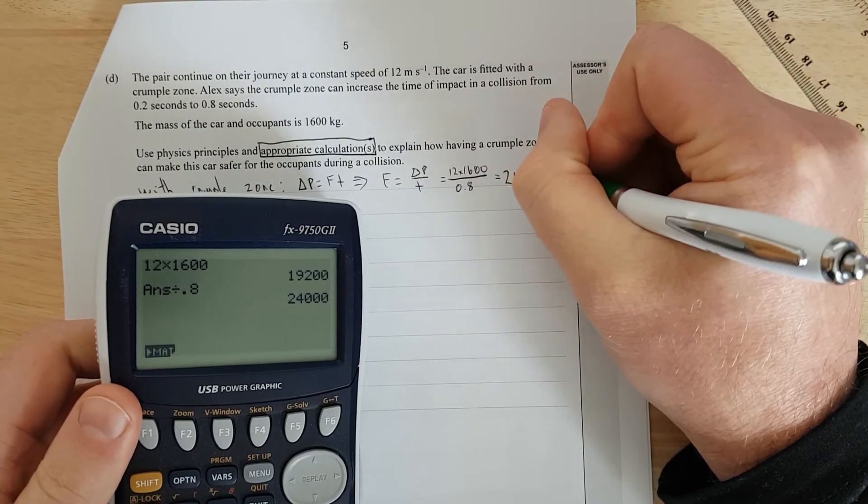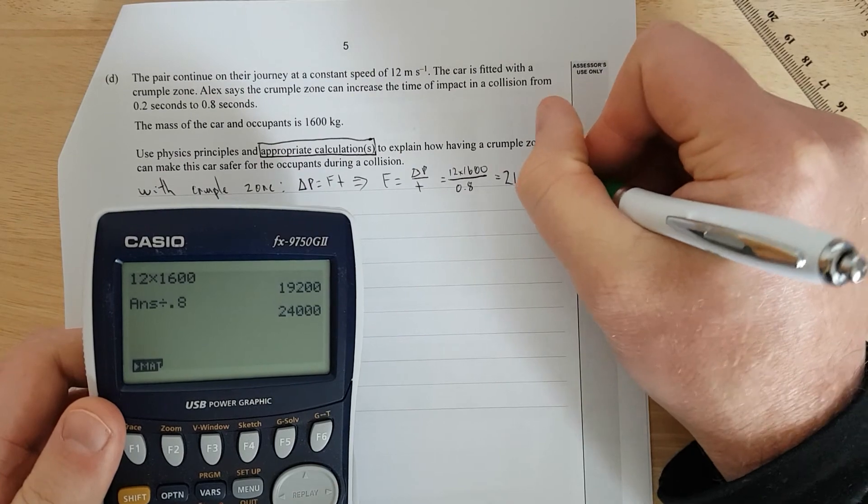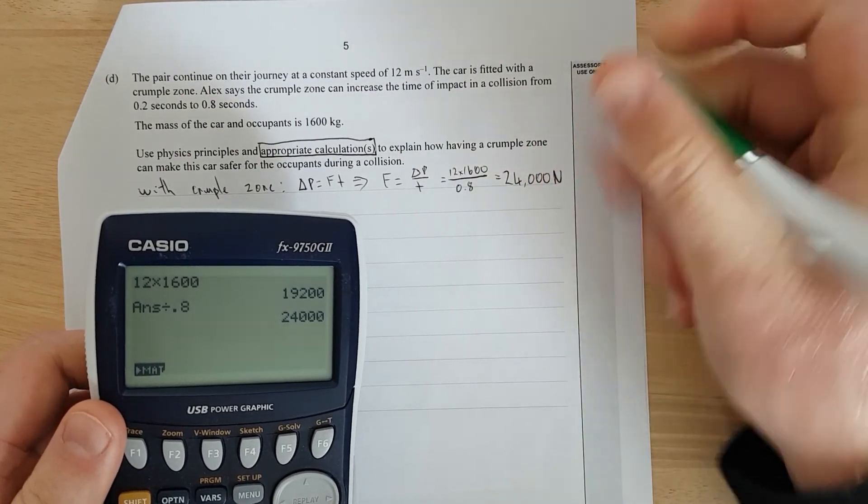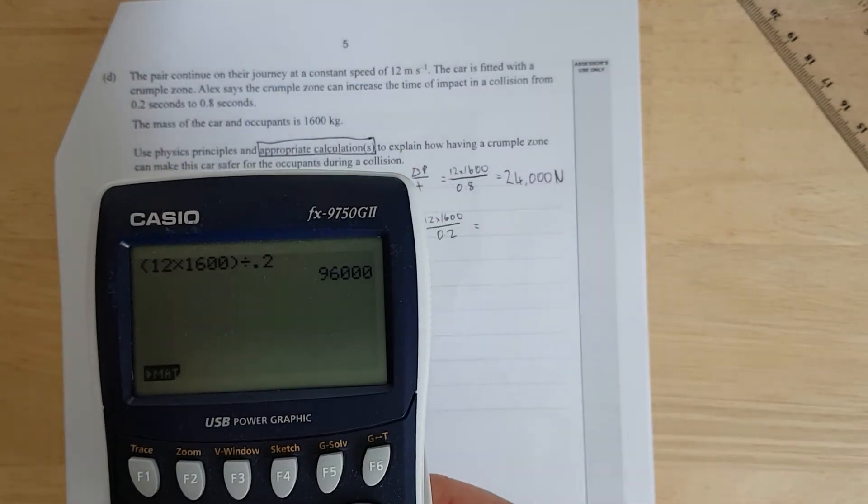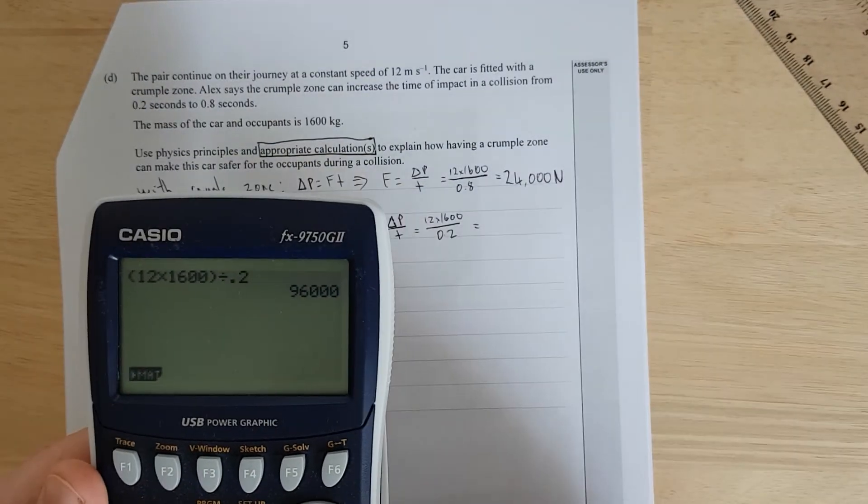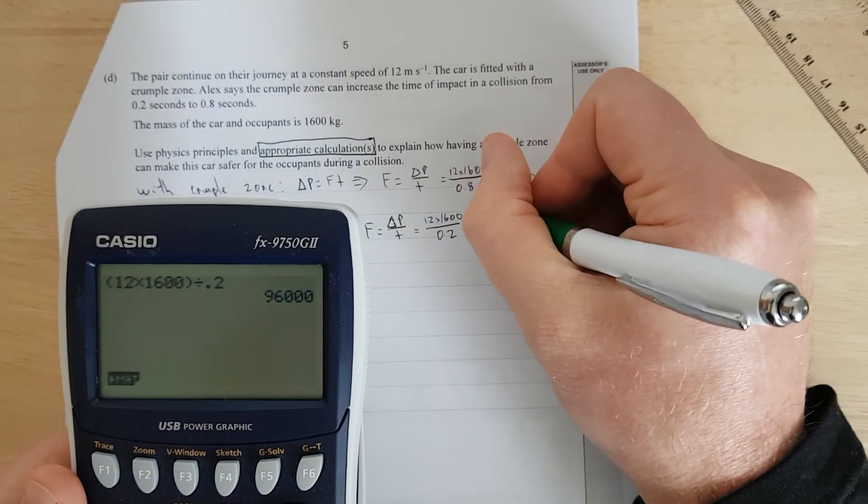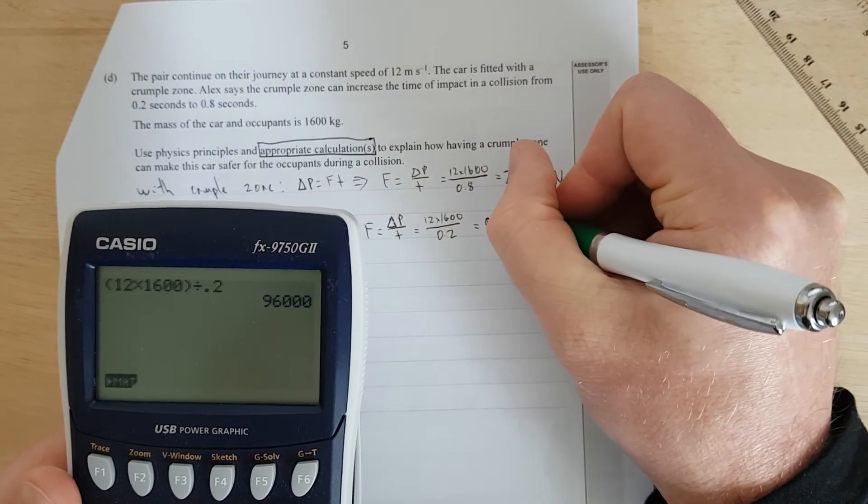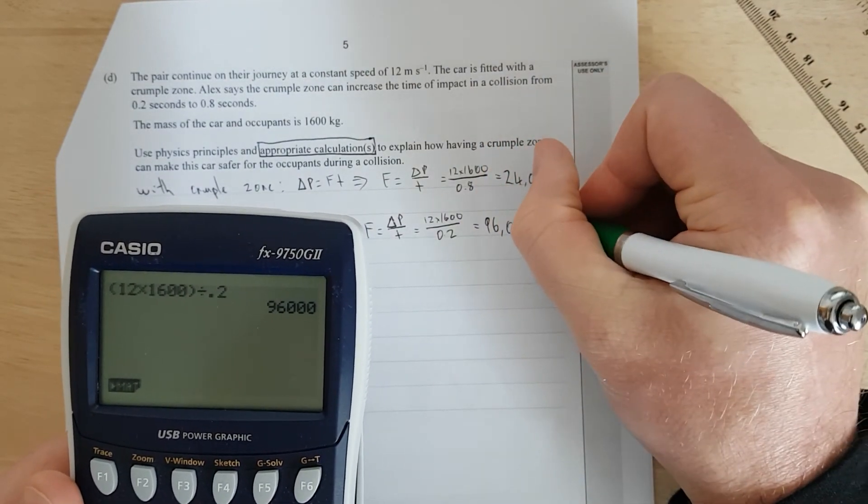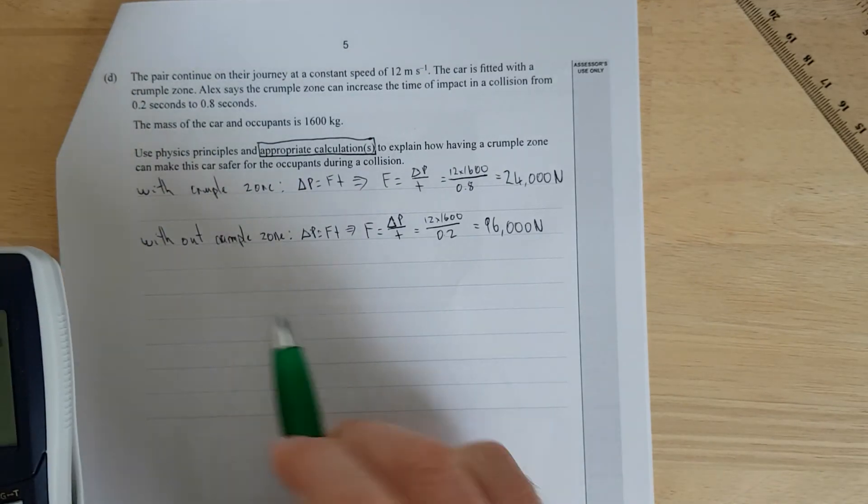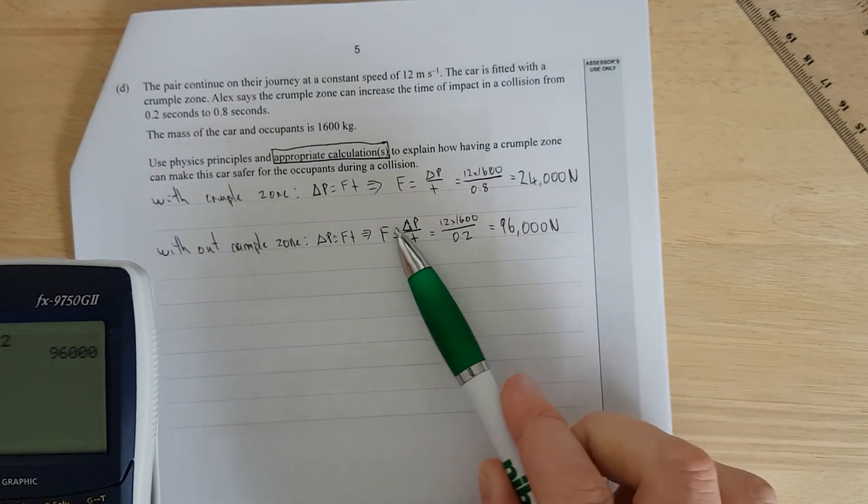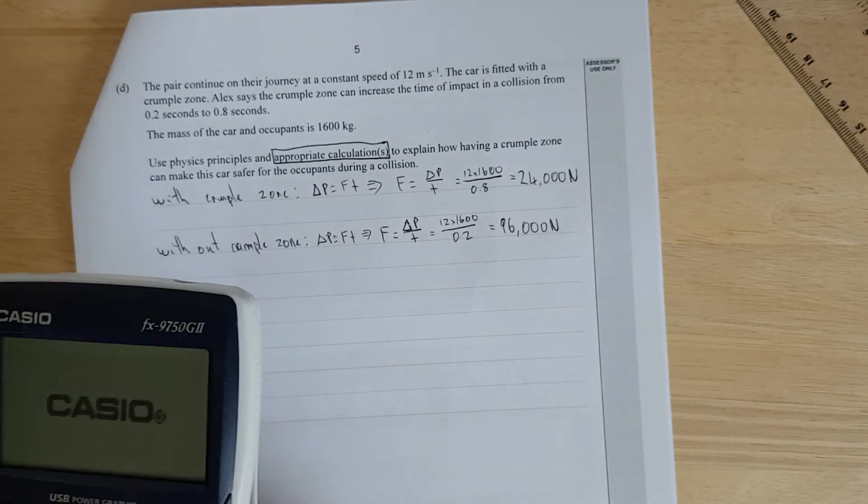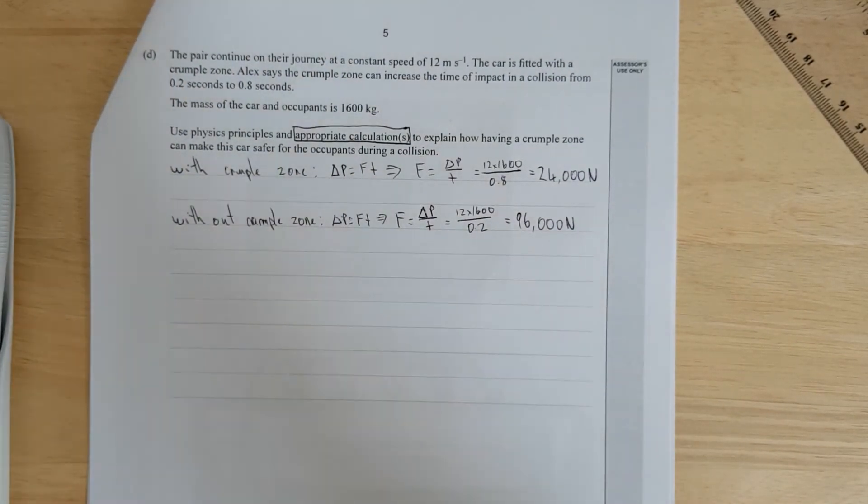So, 24,000 newtons. I'll just pause and do without, because it's the same calculation. Right, so the final force is 96,000 newtons. I literally just did exactly the same without crumple zone. Same calculations, everything. Yeah, that's really bad at that. Just, like, top tip, I suppose you could call it.